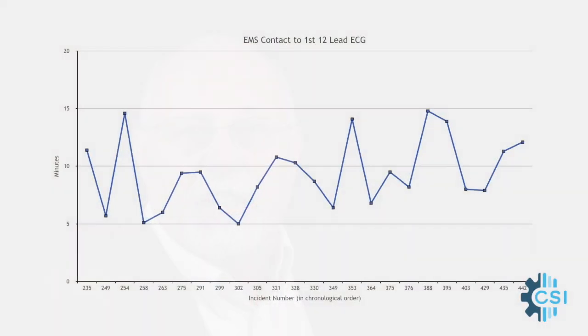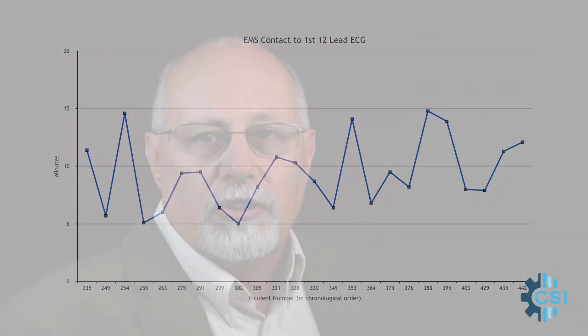Here's a run chart of data for EMS contact to first 12-lead ECG acquisition time on consecutive cases with patients over 35 years old that presented to EMS with non-traumatic chest pain. There were no new initiatives, no new protocols, no new procedures introduced while this data was being collected. So the scattering of results represents the amount of natural variation in this process.